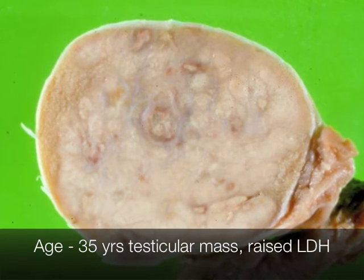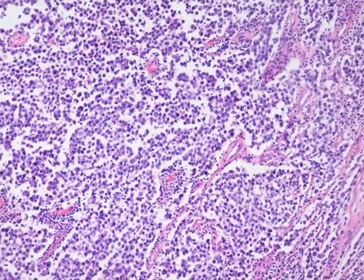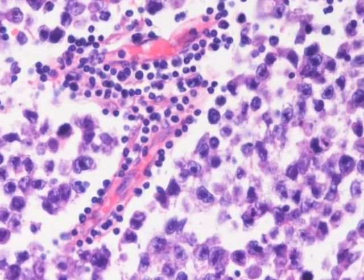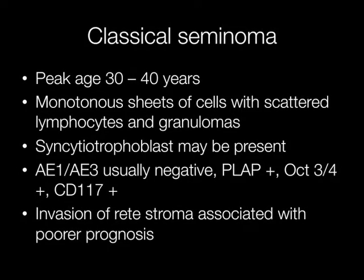This tumour is a classical seminoma. The clues are often present when the specimen is on the cut-up bench — first of all the age of the patient, as these typically occur between the ages of 30 and 40. Non-seminomatous germ cell tumours tend to occur a decade earlier. Seminomas have a rather potato-like cut surface, and histologically show monotonous sheets of cells with very prominent nucleoli. Between the cells there may be lymphocytes, granulomas may be present, and occasionally syncytiotrophoblast may also be seen.